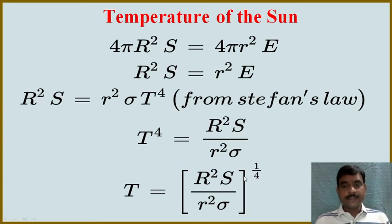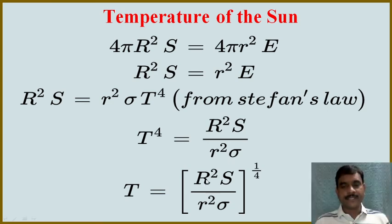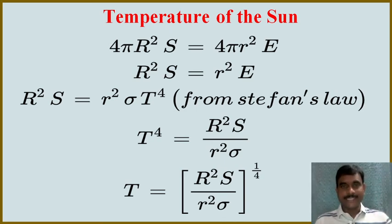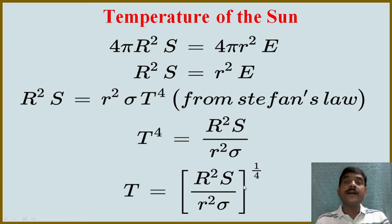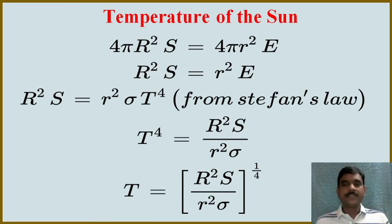Taking the fourth root, we get the temperature T. Capital R is the known distance between the sun and the Earth. The solar constant S is approximately 1340 watts per meter square, as discussed in previous videos. The radius of the sun r is also a standard value. Sigma is Stefan's constant. Substituting all these values, the temperature works out to approximately 6000 Kelvin. So the temperature of the sun is approximately 6000 Kelvin, obtained by applying Stefan's law.